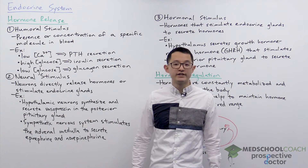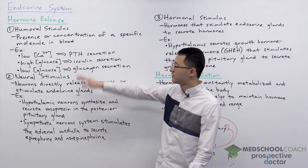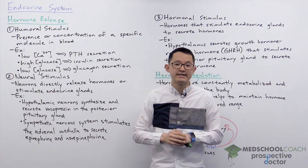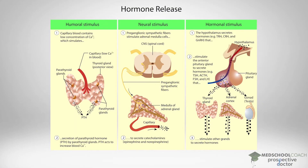In general there are three different ways that hormones can be released. The first is through humoral stimuli. A humoral stimulus looks at the presence or concentration of a specific molecule in blood. In this case we're looking at blood calcium levels — when blood calcium levels are low, this will stimulate the parathyroid glands to secrete parathyroid hormone (PTH), which will then exert its effect on target tissues to help elevate blood calcium levels.